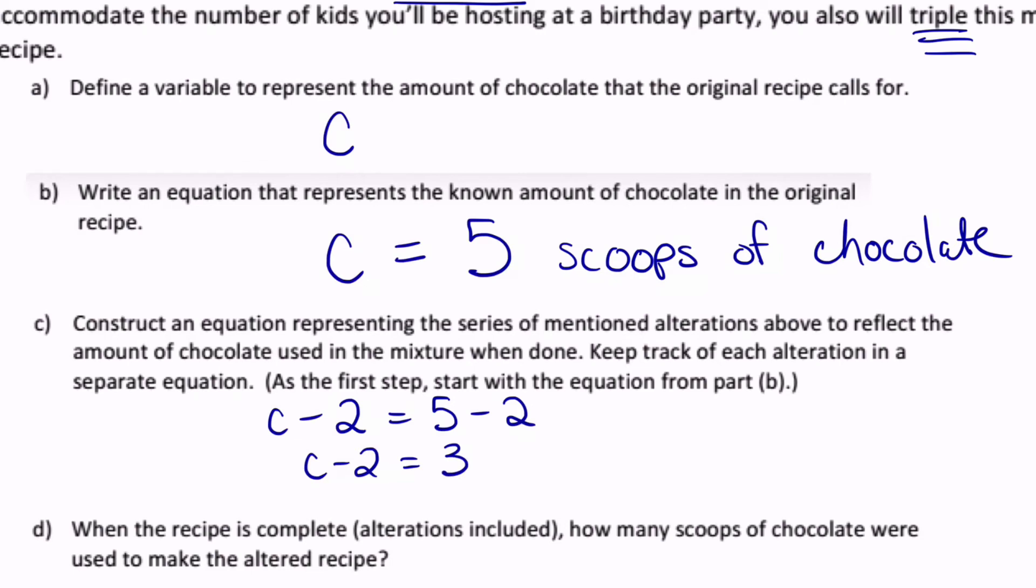Next, it tells me that I'm going to triple this amount. So I know that I need to take this quantity and multiply it times three. And likewise, take our now modified scoops of chocolate, now that's three, and also triple it, multiplied by three,